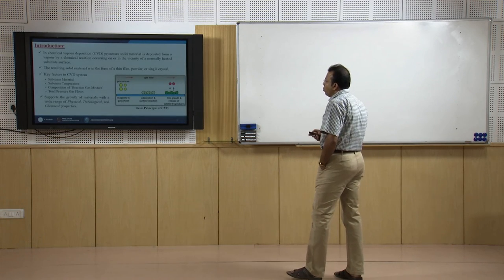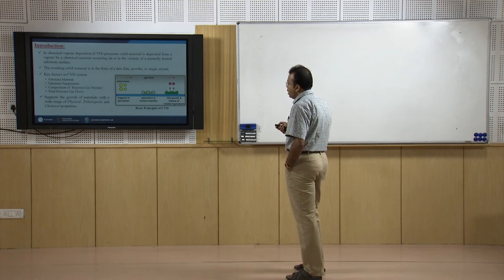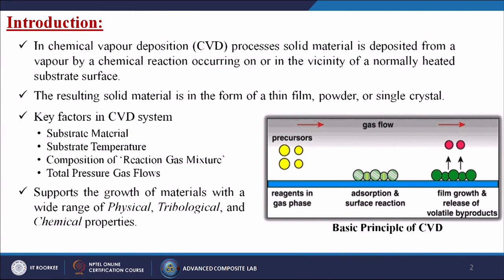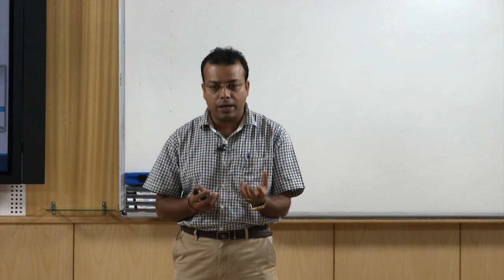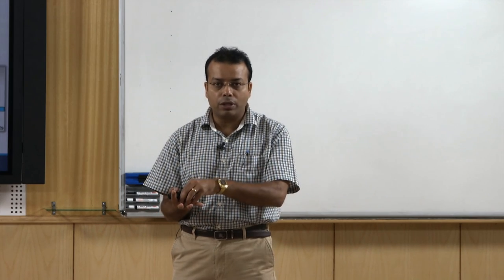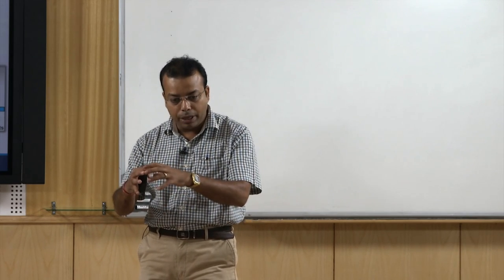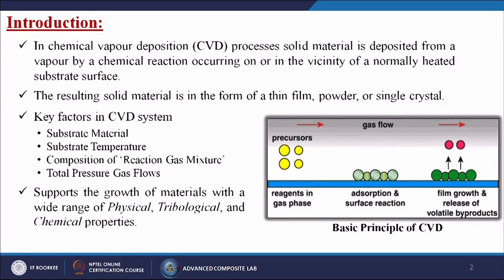In the chemical vapor deposition process, solid material is deposited from a vapor by chemical reactions occurring on or in the vicinity of a normally heated substrate. Whatever was explained for PVD — creating molecules, atoms, or plasma and depositing onto the substrate — in CVD we make certain gases or materials which react with the substrate itself and make the coating. The resulting solid material is in the form of a thin film, powder, or single crystal.